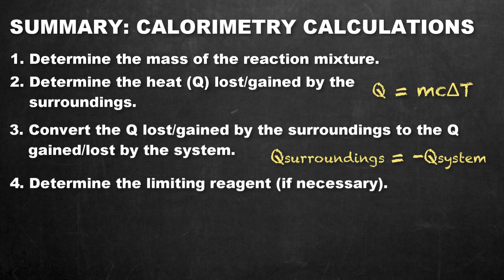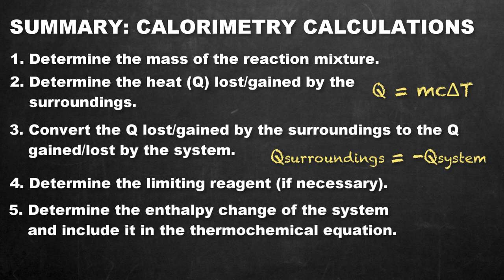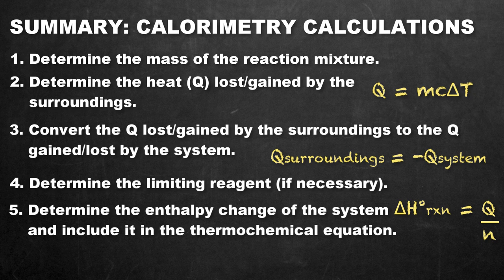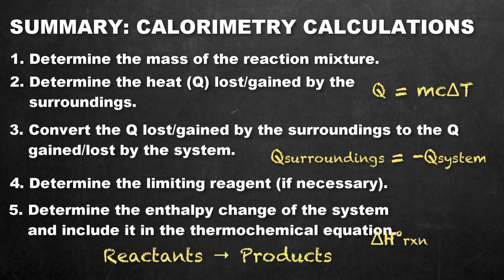Step four: determine the limiting reagent if it is a chemical reaction, because the limiting reagent establishes how much heat is used or absorbed by the process. Step five: take the overall heat gained or lost by the system, calculate it per mole of the limiting reagent, and establish the overall enthalpy change per mole of limiting reactant. Keep in mind that this is per mole of limiting reactant, so if there are different coefficients in your chemical equation, you must account for that before putting your final value in the thermochemical equation.